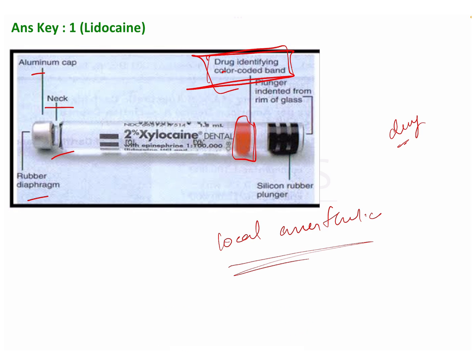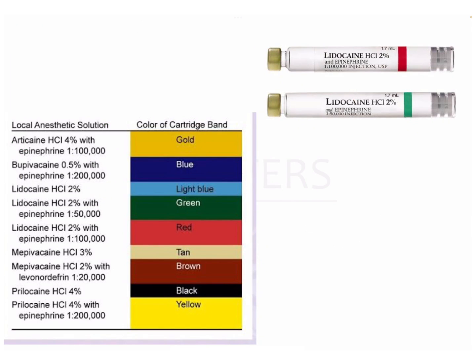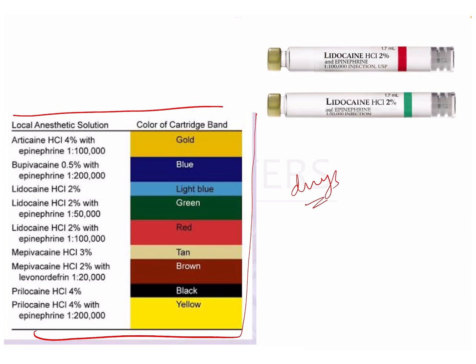These are the different color-coded bands seen in clinical scenarios. One important thing to notice is that it is not only different drugs that are color-coded, but also the concentration. So you have to remember both. The commonly used drugs are articaine, bupivacaine, lidocaine, mepivacaine, and prilocaine.